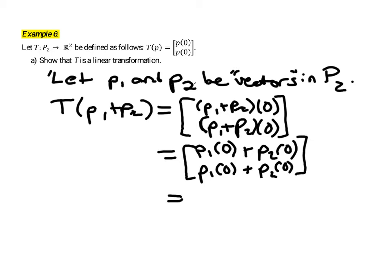But then this could be separated into two separate vectors, where the first vector is P1 of zero, P1 of zero, and the second vector is P2 of zero, P2 of zero.